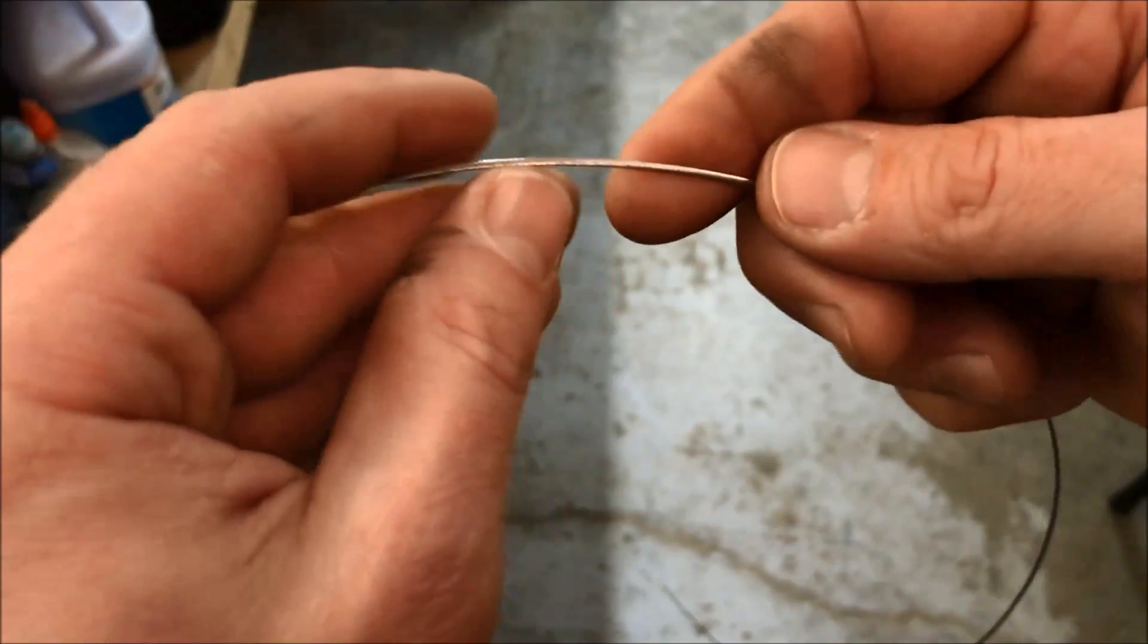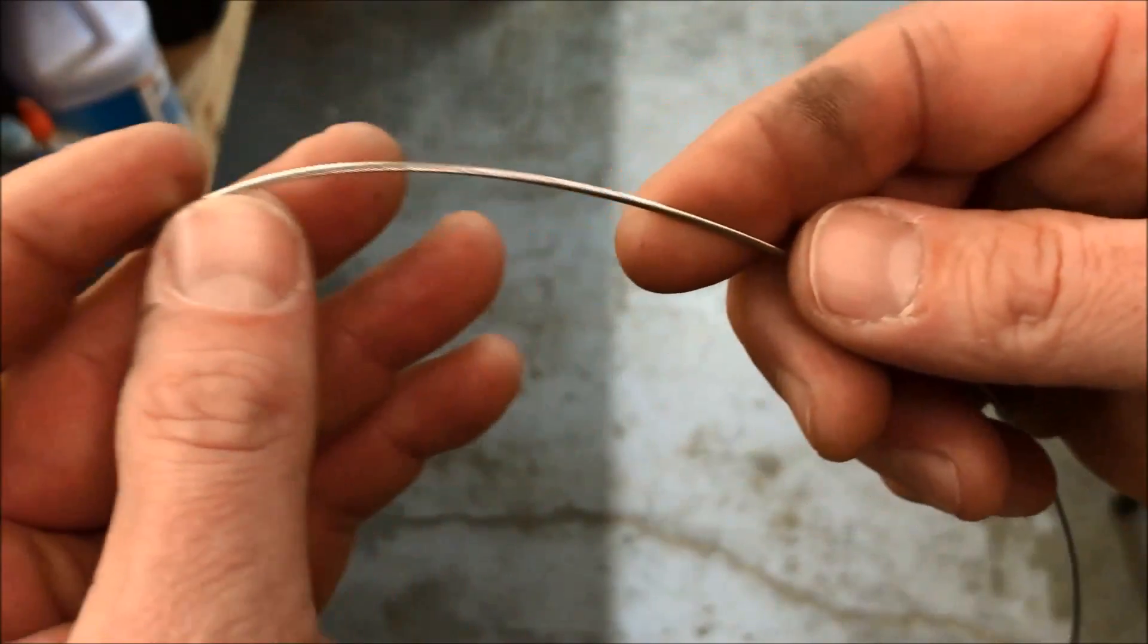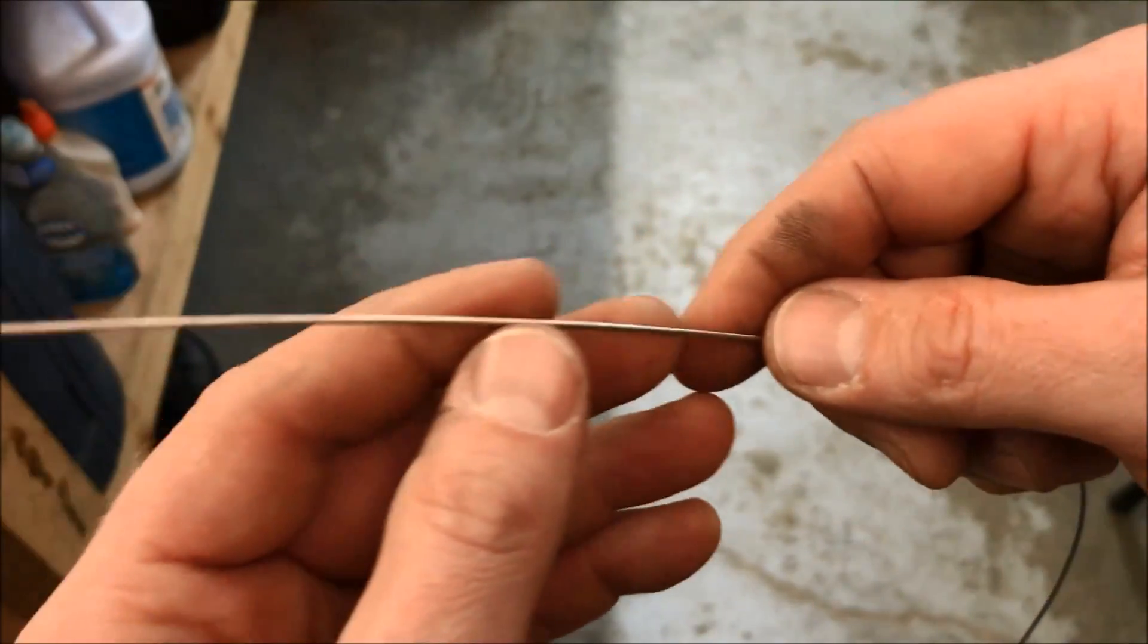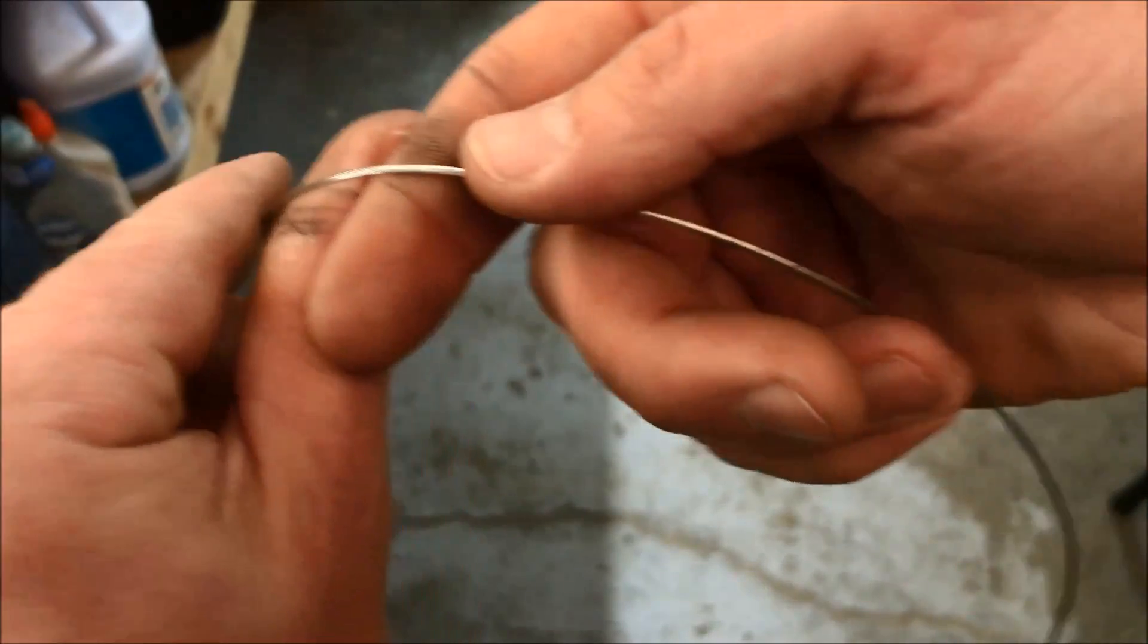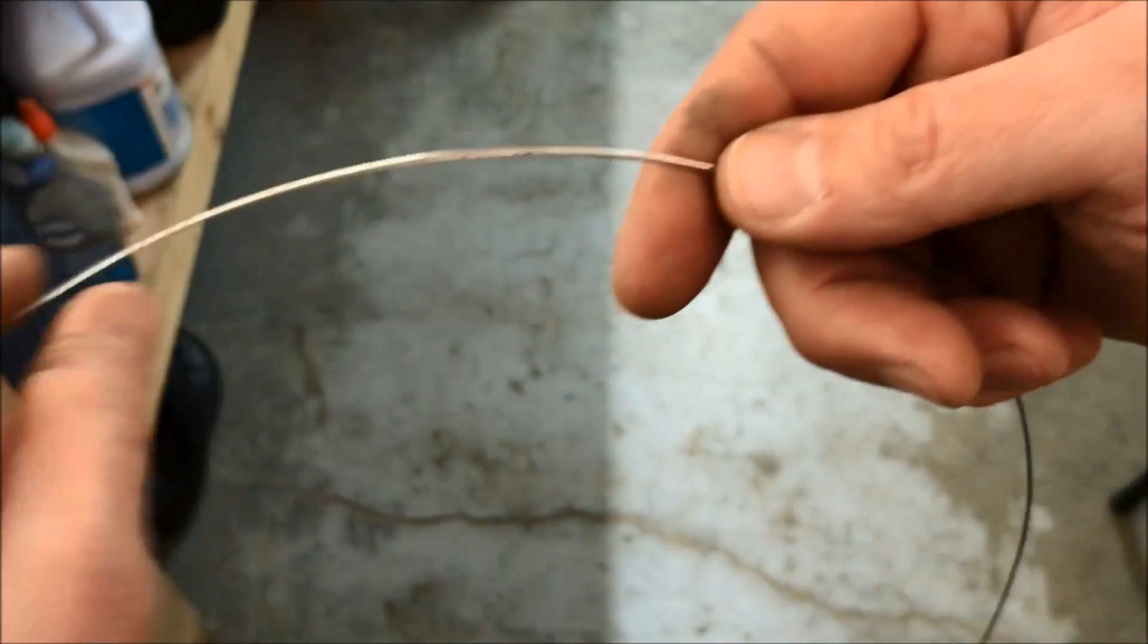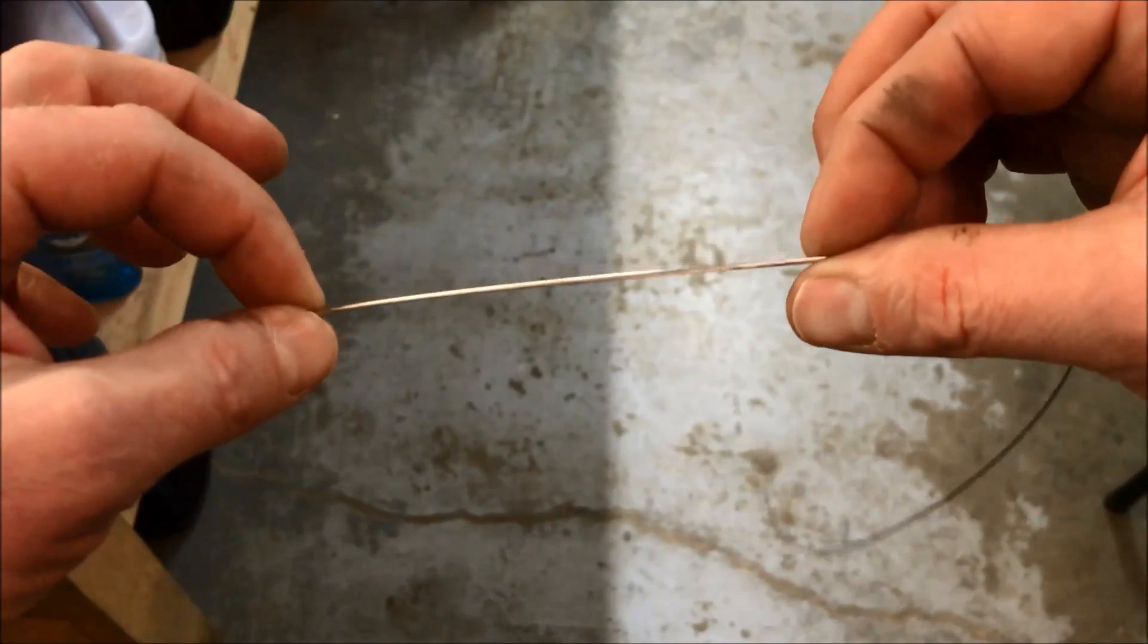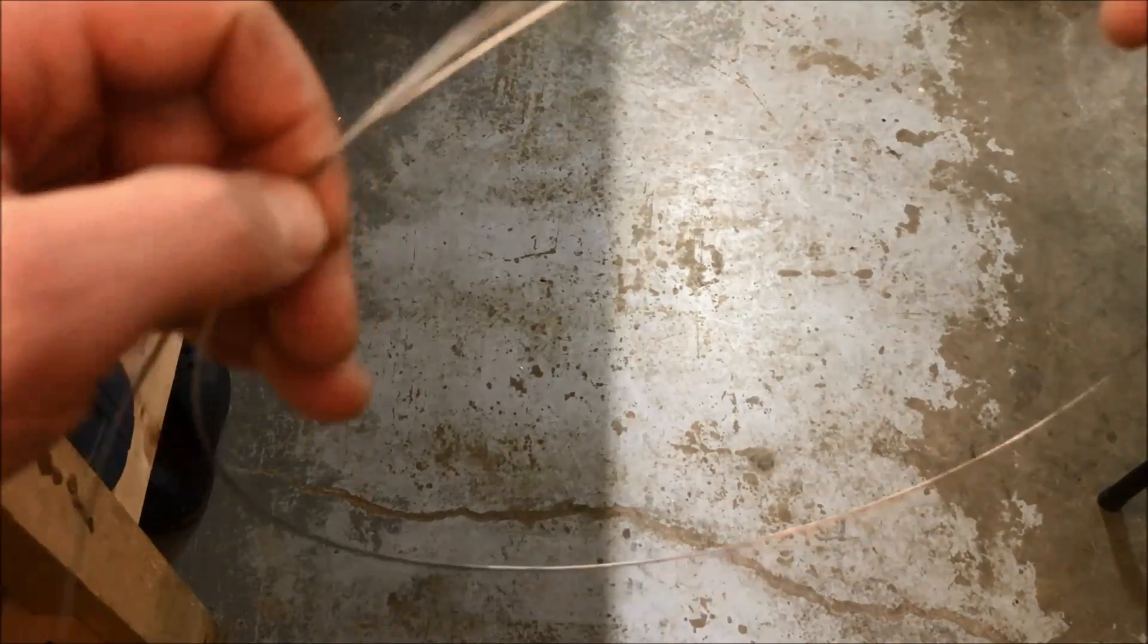So I cut myself a 50 inch strand of 3/64th cable. Now what I normally do first is load it. What I mean by loading is bending it. So you're kind of hyper extending the natural curvature to make as much of a circle as you can.